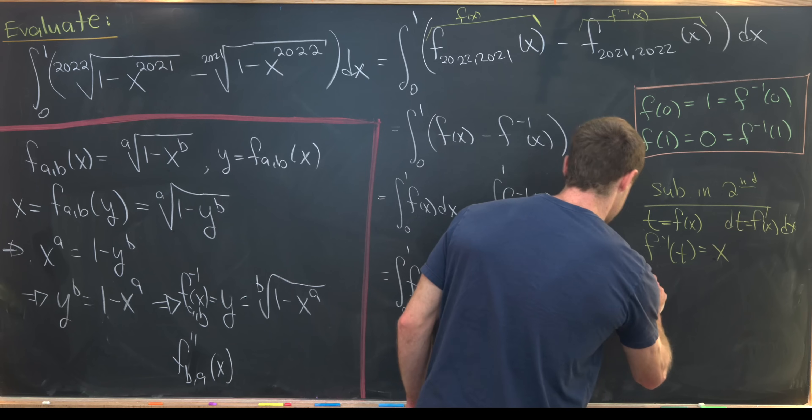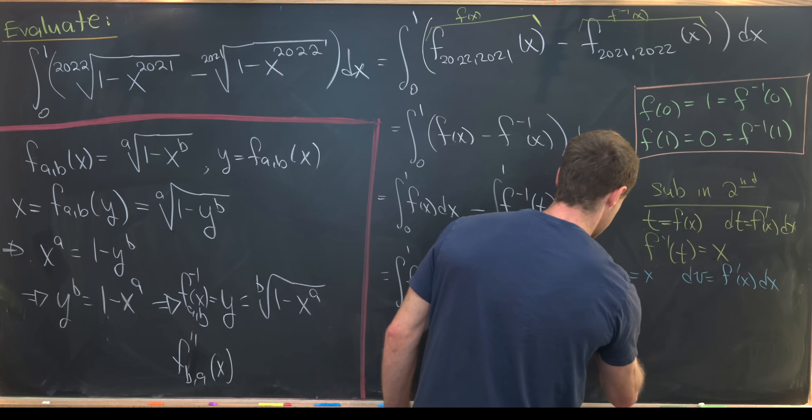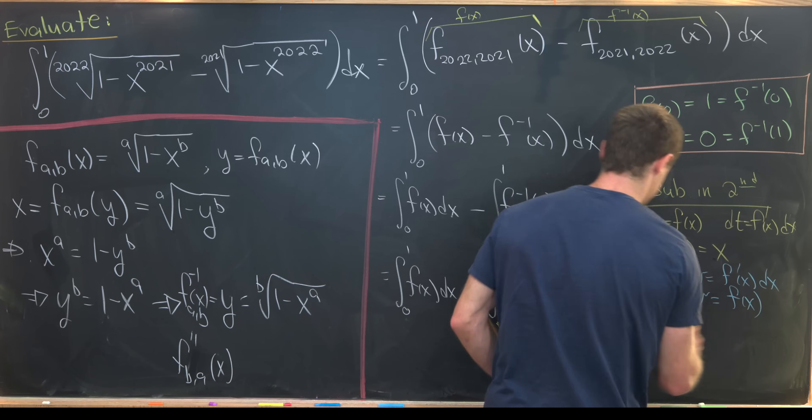Let's take u to be x and dv to be f prime of x dx. That means du is equal to dx and v is equal to f of x.